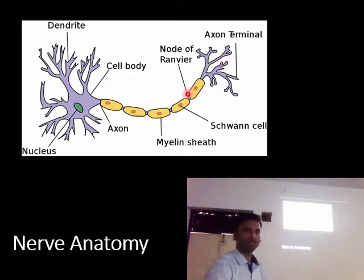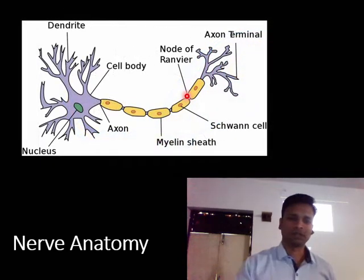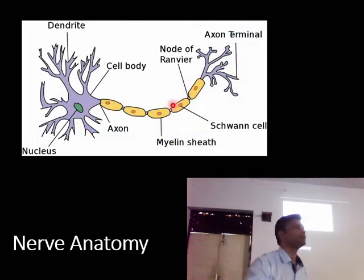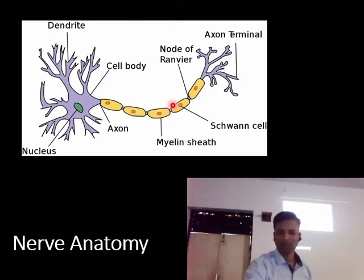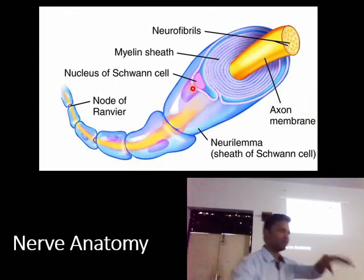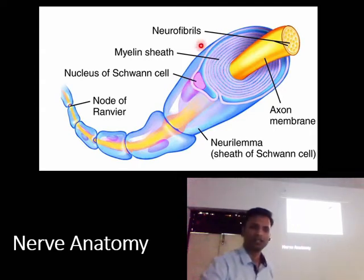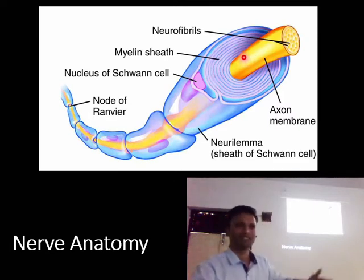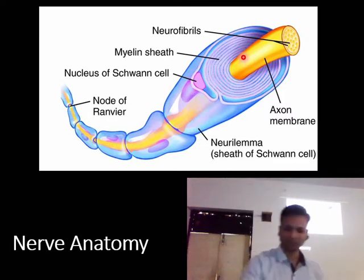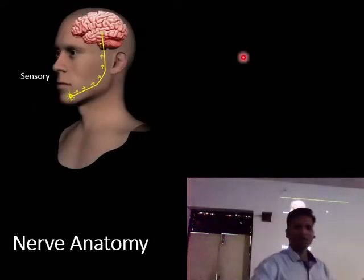If you remember from your books, the nerve fiber axon is surrounded by a myelin sheath. The myelin sheath is nothing but a Schwann cell that has deposited a sheet around the axon in a spiral fashion. You can see the nucleus of the Schwann cell, and it has deposited the myelin sheath around the axon in a spiral fashion.